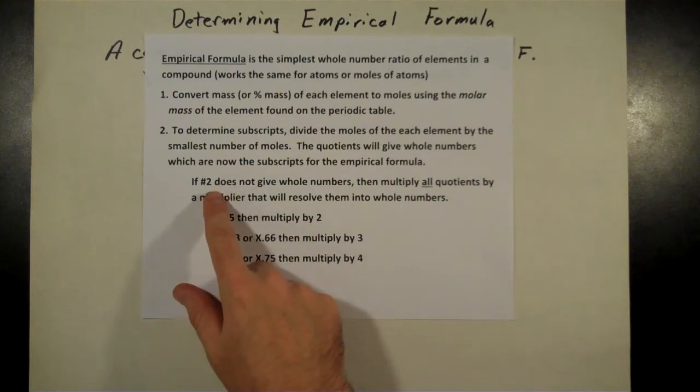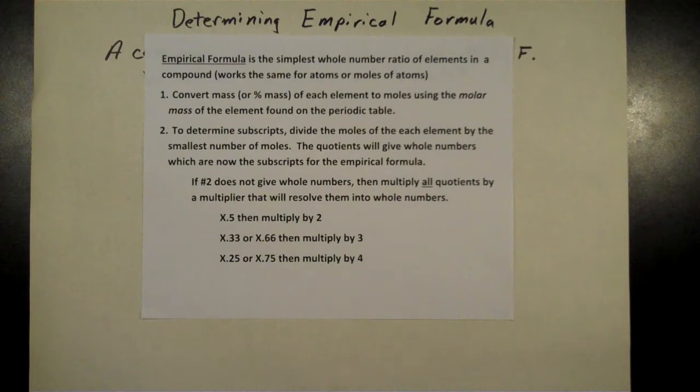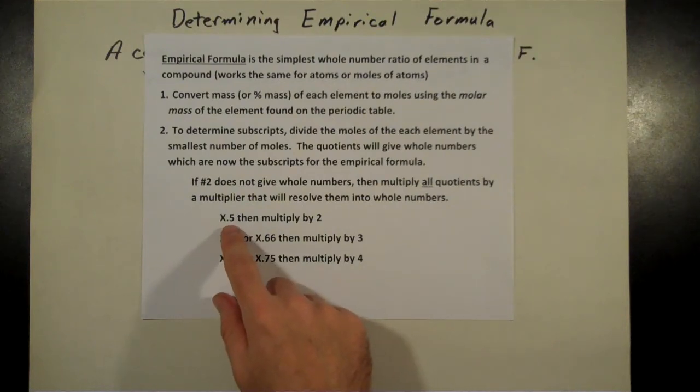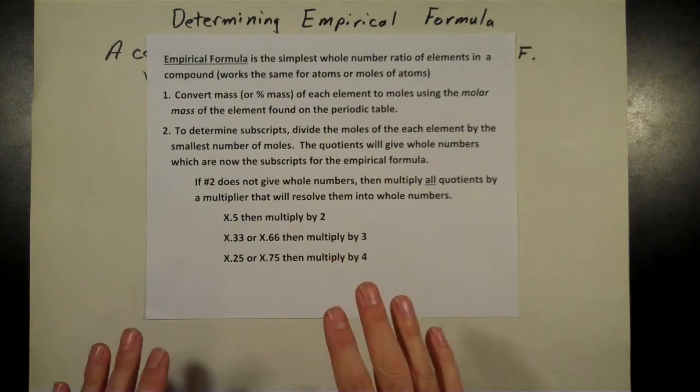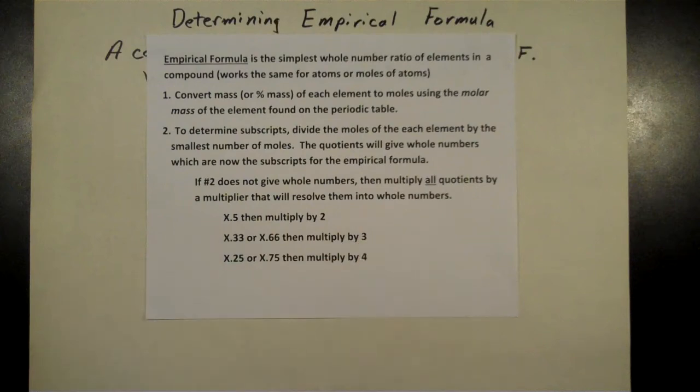Occasionally, and we'll do some examples of this a little bit later, if this second step here does not give whole numbers, then what you need to do is multiply all those values, all your mole amounts, by some multiplier. If you get a number with a 0.5 trailing it, then you multiply by 2. A number with a 0.33 or 0.66 trailing it, then you multiply by 3. Or a 0.25 or 0.75, you multiply by 4. You won't always have to do that, that's just kind of a just-in-case thing. All right, so let's take a look at this first example then.